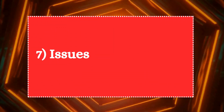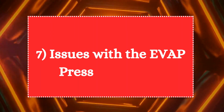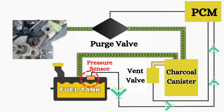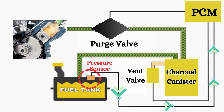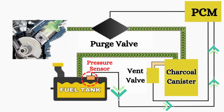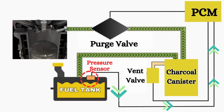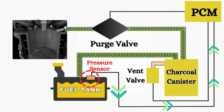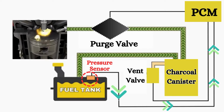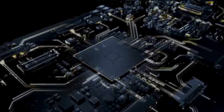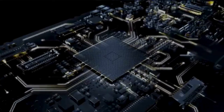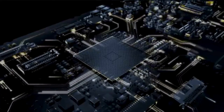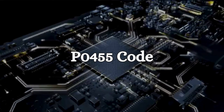7. Issues with the EVAP pressure sensor. The EVAP pressure sensor monitors the pressure within the EVAP system. A faulty sensor can provide incorrect readings, falsely indicating a leak even if there isn't one, and triggering the P0455 code.